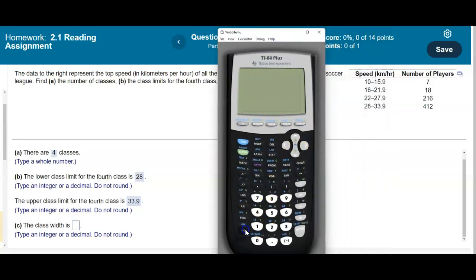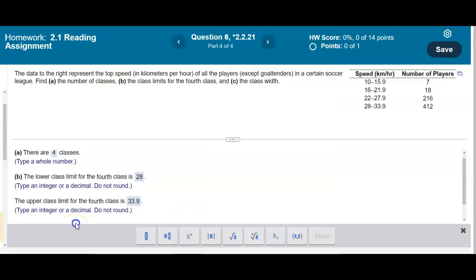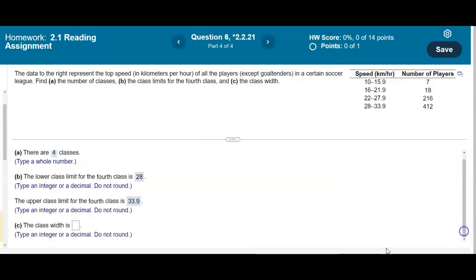So if I take 16 and I subtract 10, that gives me 6. Now let's do the same thing. If I take 22 and subtract 16, let's see what happens. 22 minus 16. Again those are the consecutive lower class limits. That also gives us 6. We take 28, subtract 22, and we get 6. So therefore we would say that the class width is 6.